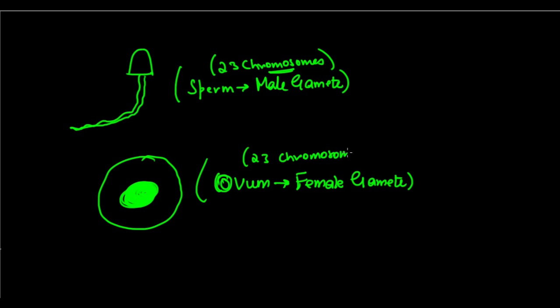When these two fuse, they give 46 chromosomes, which counts to 23 pairs of chromosomes. So that's how actually the number of chromosomes is maintained.